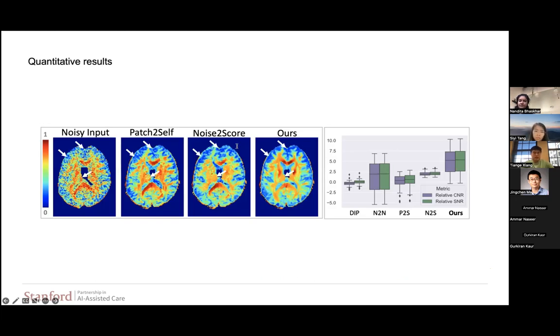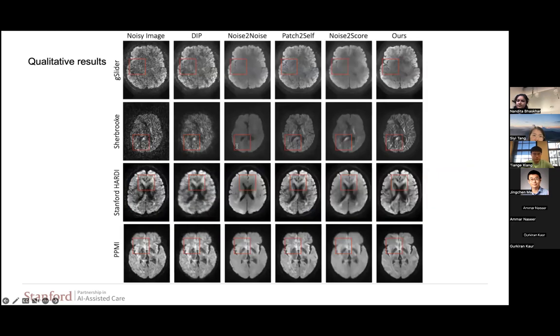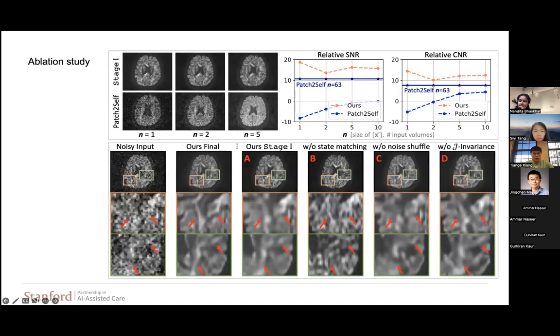Then we compare our method against the other state-of-the-art on quantitative analysis. For FA maps, our method can generate the most clean and clear results. And for relative contrast noise ratio and relative signal noise ratio, our method can achieve the best scores. From the quantitative perspective, our method was evaluated on four real-world data sets. And our method can achieve the best results when compared against every previous method with significant denoise and quality improvements. We have also done some ablation studies to prove that all of our proposed components actually contribute equally to the final success.